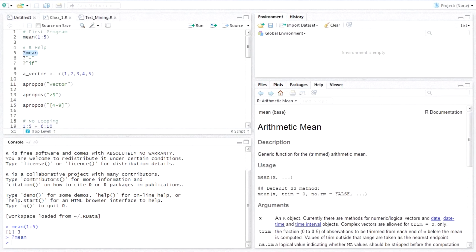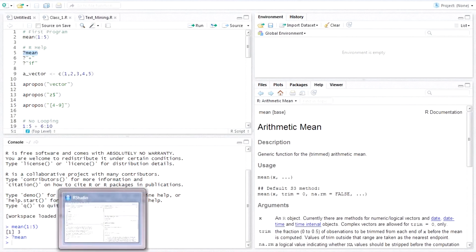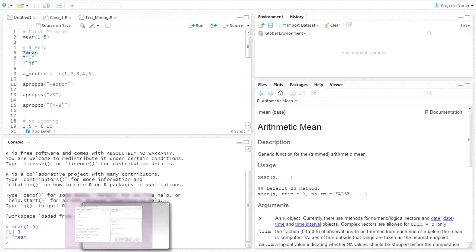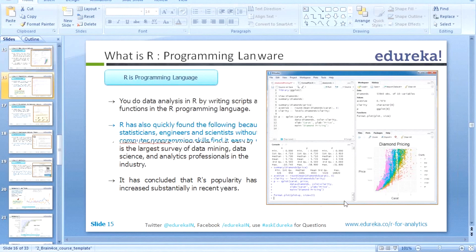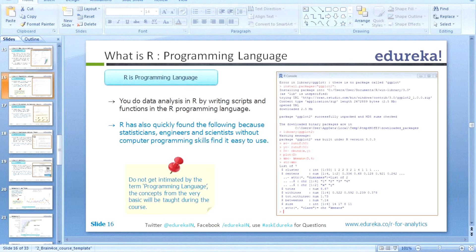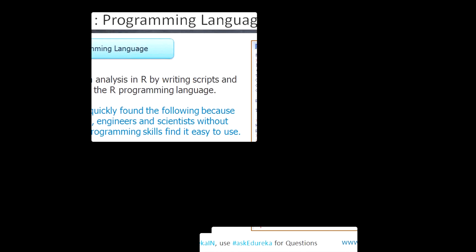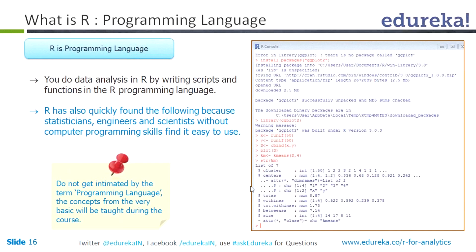So this is R Studio, one distribution of R that we are going to use in our classes. You do analysis in R by writing scripts. The place where I am writing is known as the script window, where you can write the script and submit it and see the result in the console window. It is very simple to use.